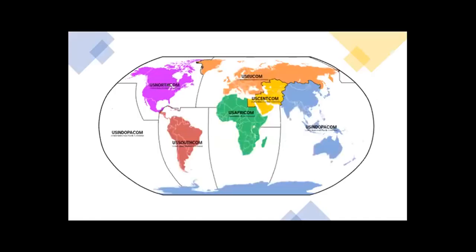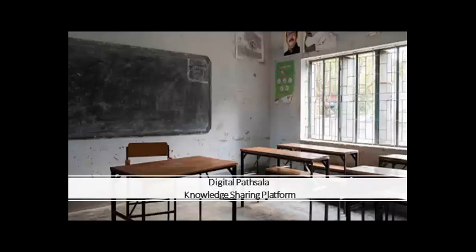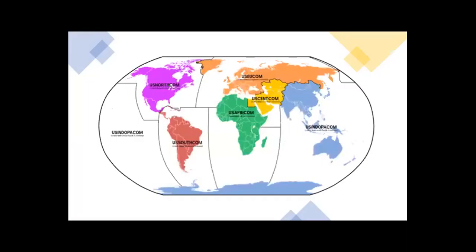As you can see in the map, USA has divided the entire world into different geographic locations like the Asian continent, European continent, African continent, Latin America, North America, and the Pacific region. USA has divided the entire geographic world and distributed its military assets accordingly.